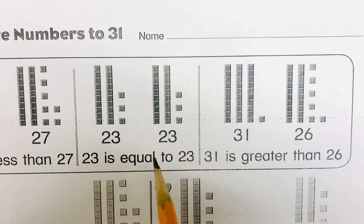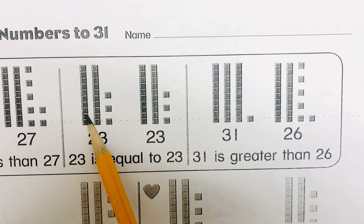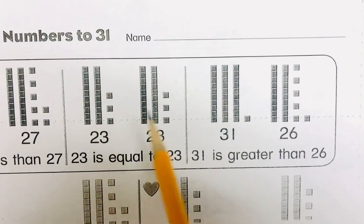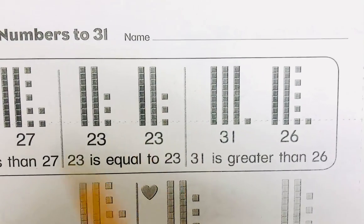23 is equal to 23. That's pretty easy. One group of 10, one group of 10. Two, two. Three little ones, three little ones. So that's easy peasy.